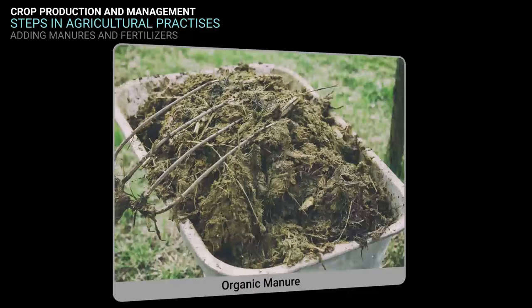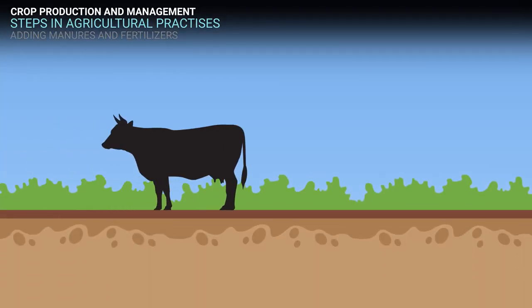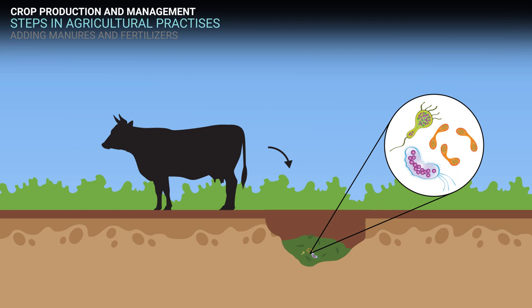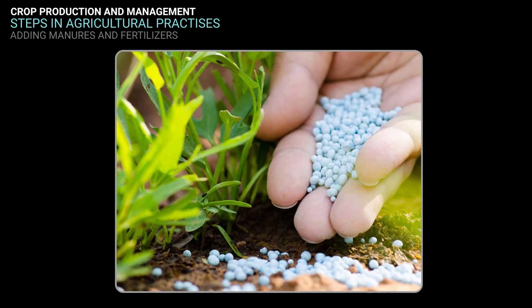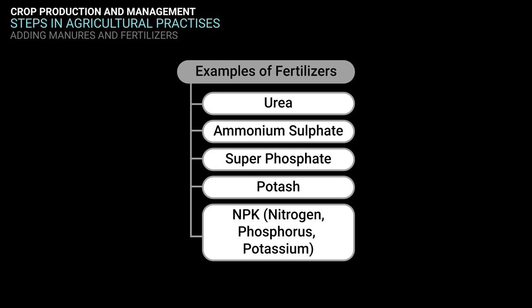Manure is an organic substance obtained from the decomposition of plant or animal wastes. Farmers dump plant and animal waste in pits at open places and allow it to decompose, caused by microorganisms present in the soil and waste matter. The decomposed matter is then used as organic manure on the fields. Fertilizers are chemical substances rich in particular nutrients, produced in factories and inorganic in nature. Examples of commonly used fertilizers include urea, ammonium sulphate, superphosphate, potash, and NPK — which stands for nitrogen, phosphorus, and potassium — the three main elements required for good vegetative growth of plants.